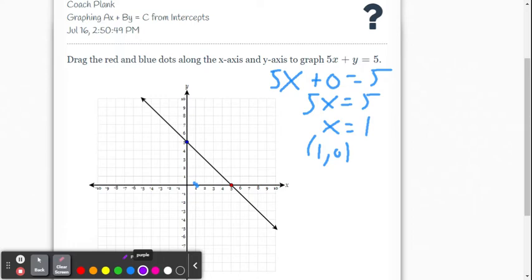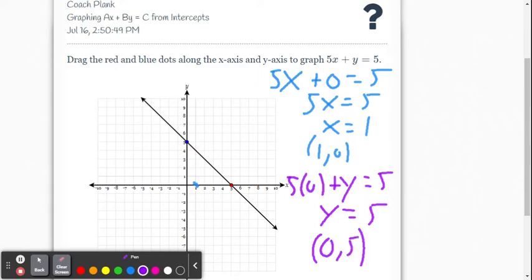So all we do is we set x equal to 0. So we're going to go 5 multiplied by 0 plus y equals 5. This becomes 0. So you get y equals 5. Now, what's the ordered pair? Be careful. x is 0 and y is 5. So that's going to be this point right here.